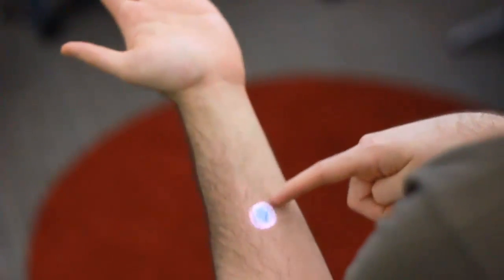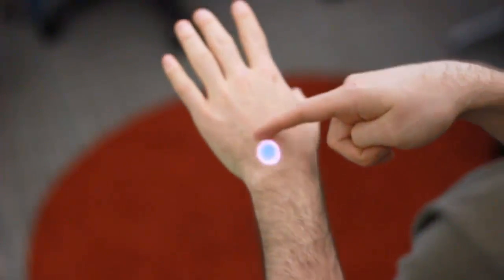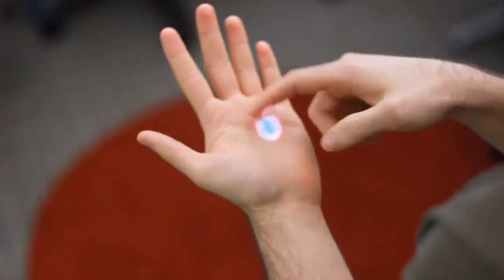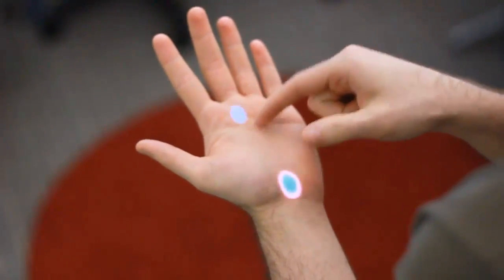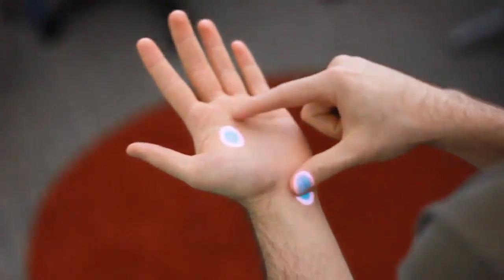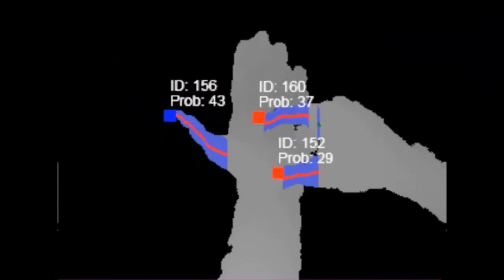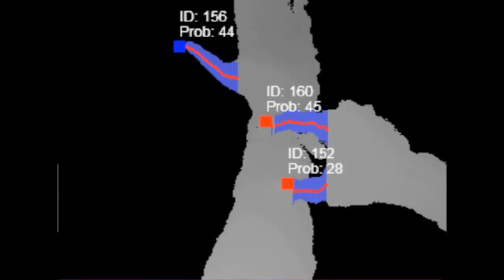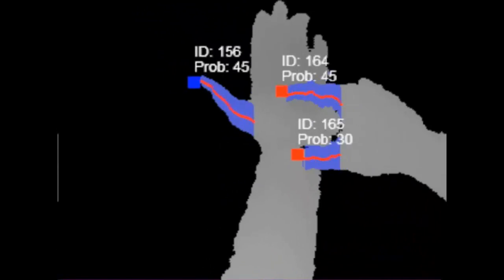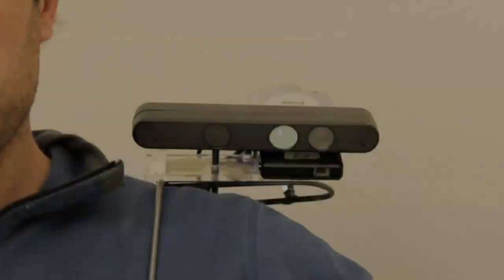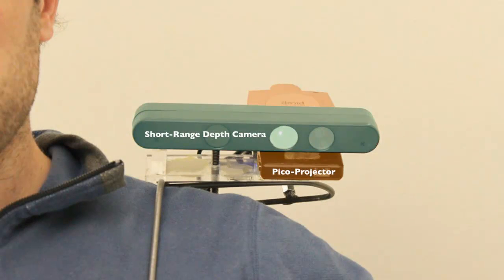Our finger-tracking approach can localize multiple fingers in 3D space and determine if they are hovering above or clicked on a surface. Our system also identifies, tracks, and classifies surfaces suitable for projected interfaces. The primary components are a short-range depth camera and a picoprojector. Please refer to the paper for details.